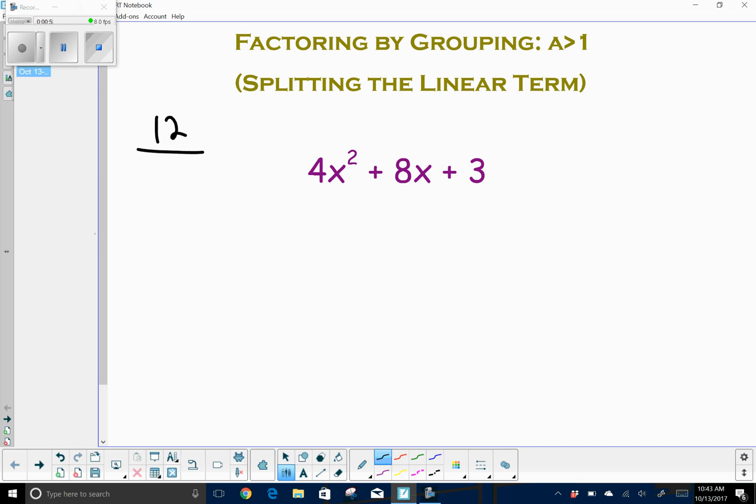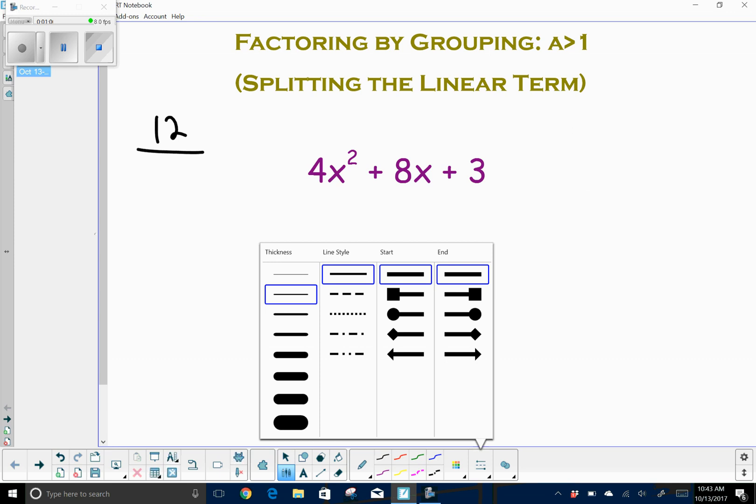So four times three is obviously 12. I'm going to figure out the factors of 12 that would help me get to a sum or difference of, in this case, the linear term is eight.